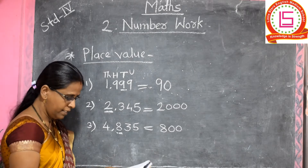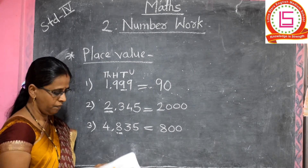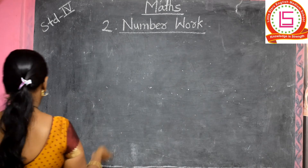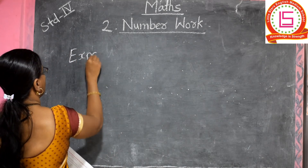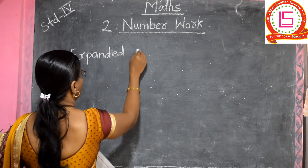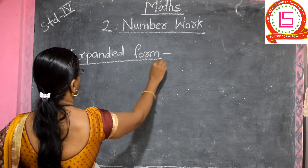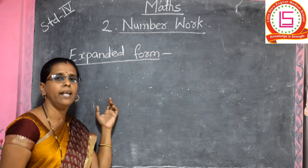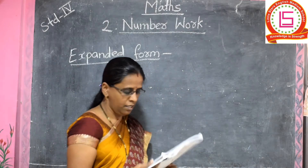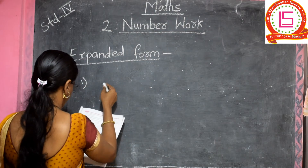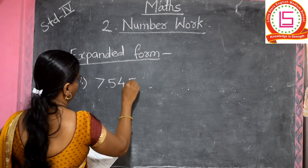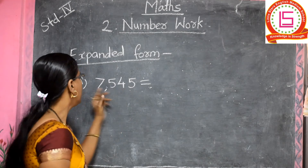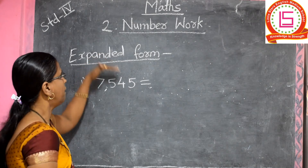Now it is very simple. Our next point is expanded form. In expanded form, a number is given and you write the expanded form of that number. Let's take one example. The number is 7,545. We write the expanded form of this number.